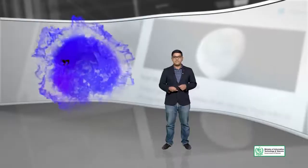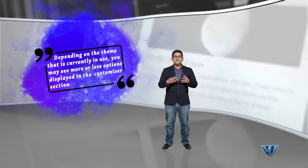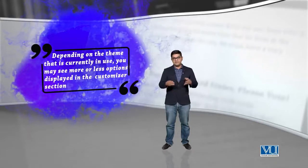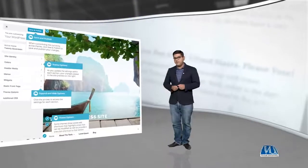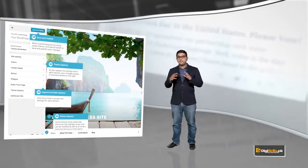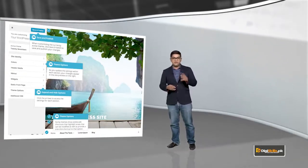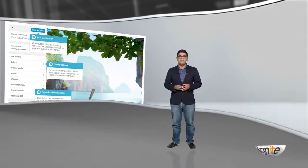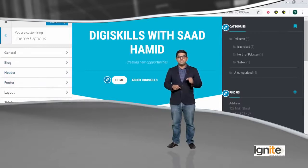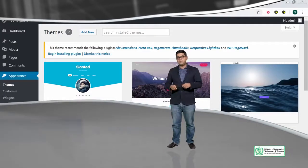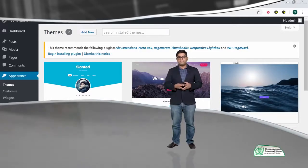The content remains the same. Depending on the theme that is currently in use, you may see more or less options displayed in the customizer section. Using this, you can customize your site and change the look and feel of the whole panel. Small arrows will allow you to edit different parts, and the sidebar will allow you to edit different sections using the customizer feature of WordPress.